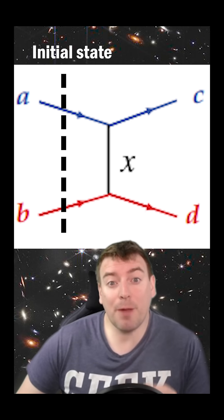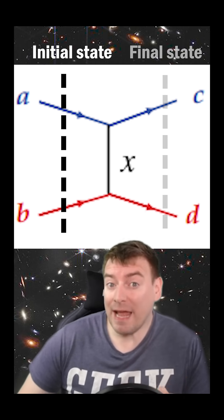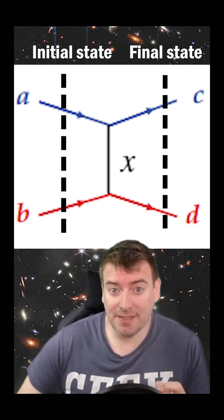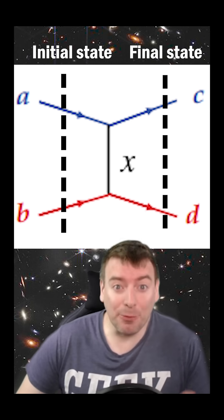The left-hand side of a Feynman diagram represents the initial state, while the right-hand side is the final state. Everything in between is how the interaction happened.